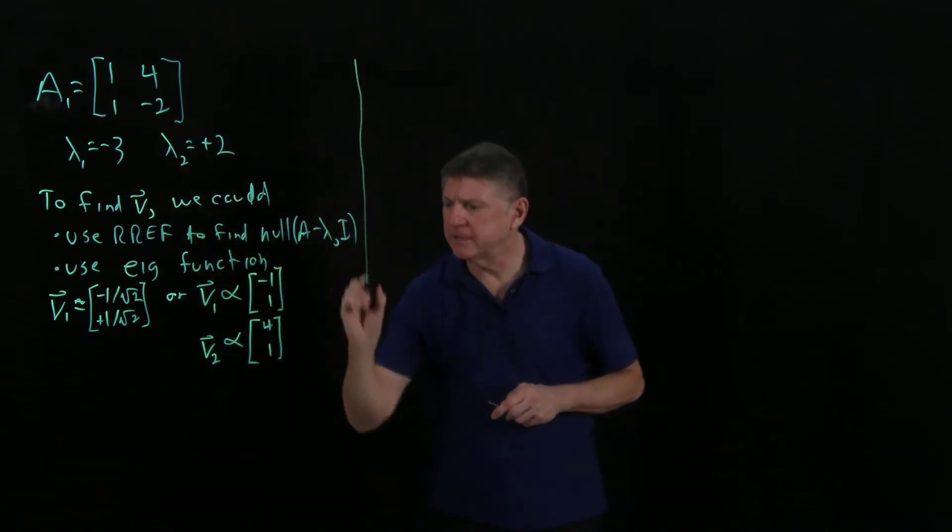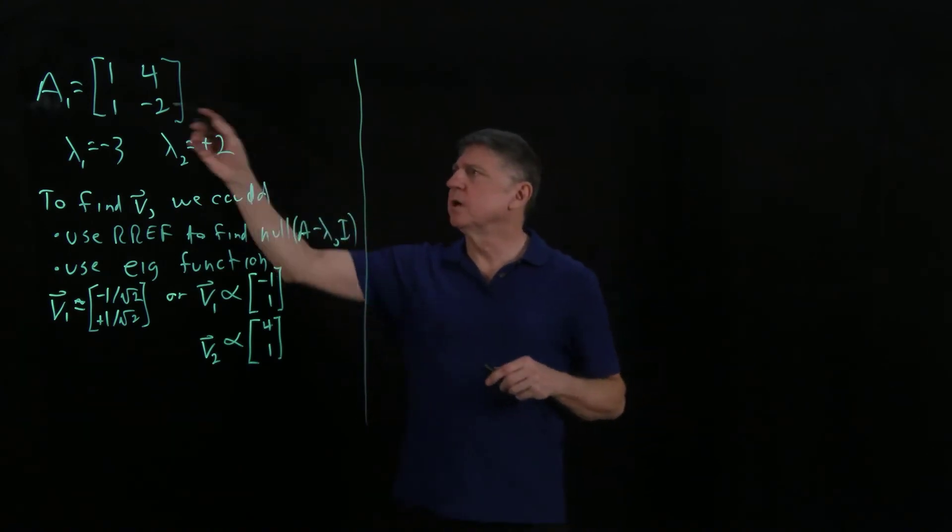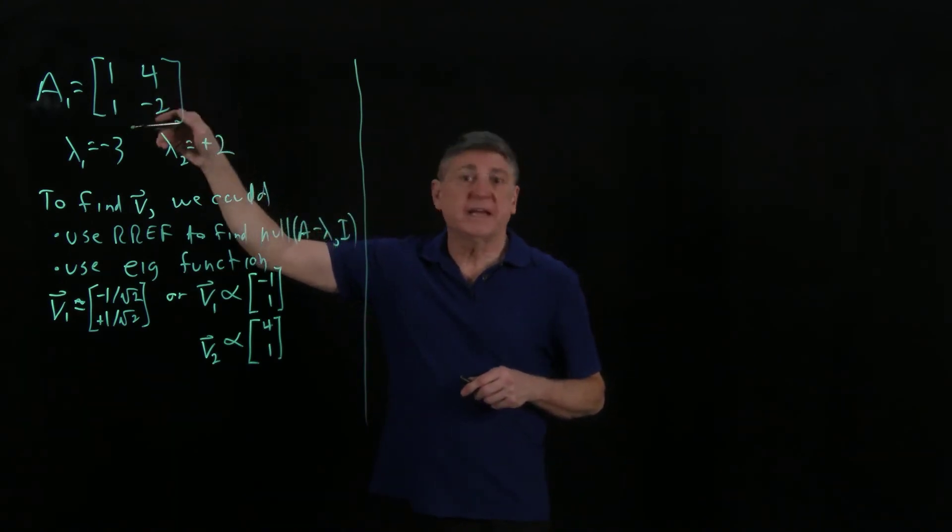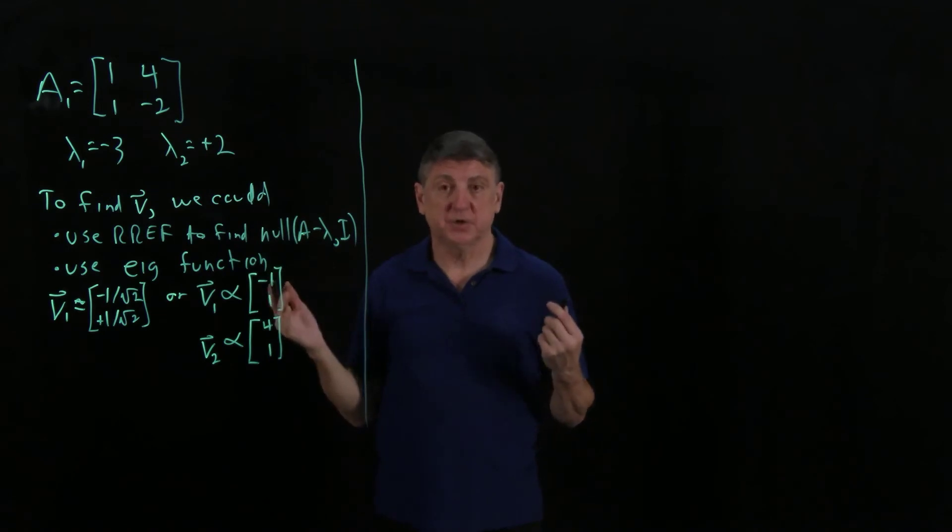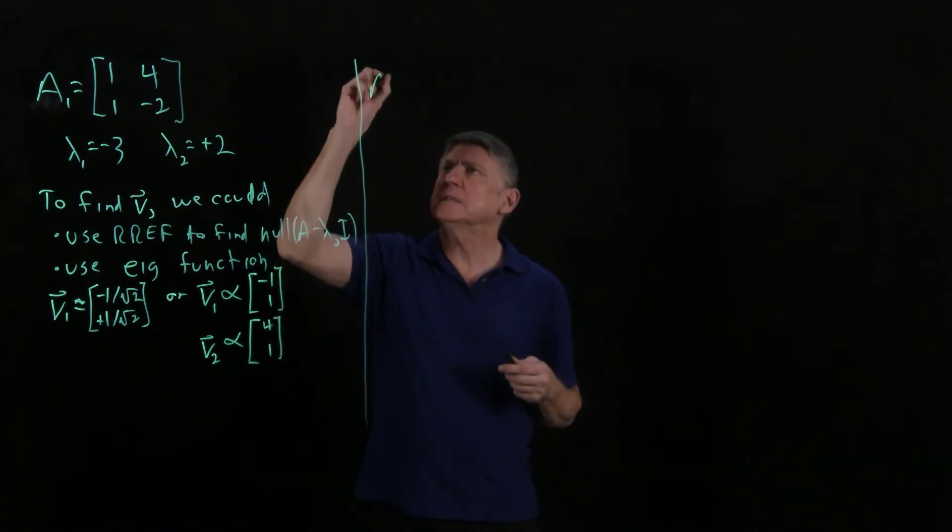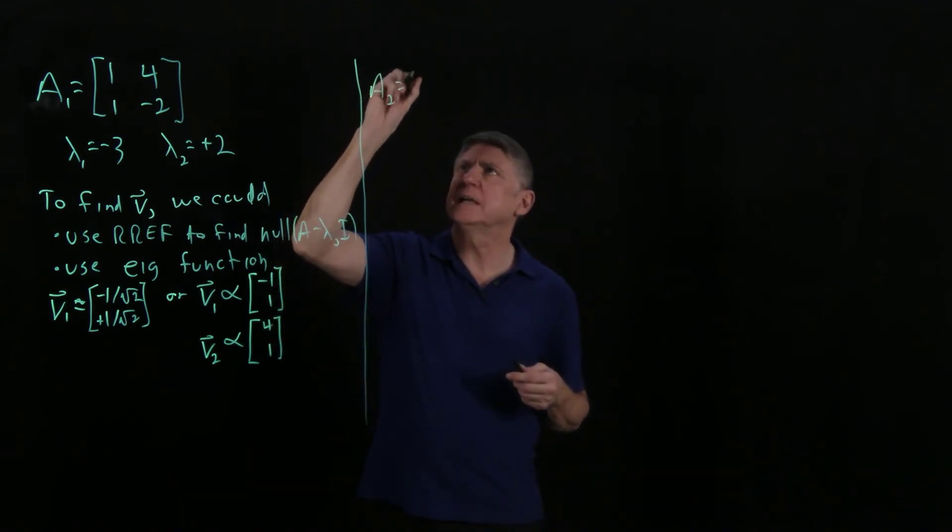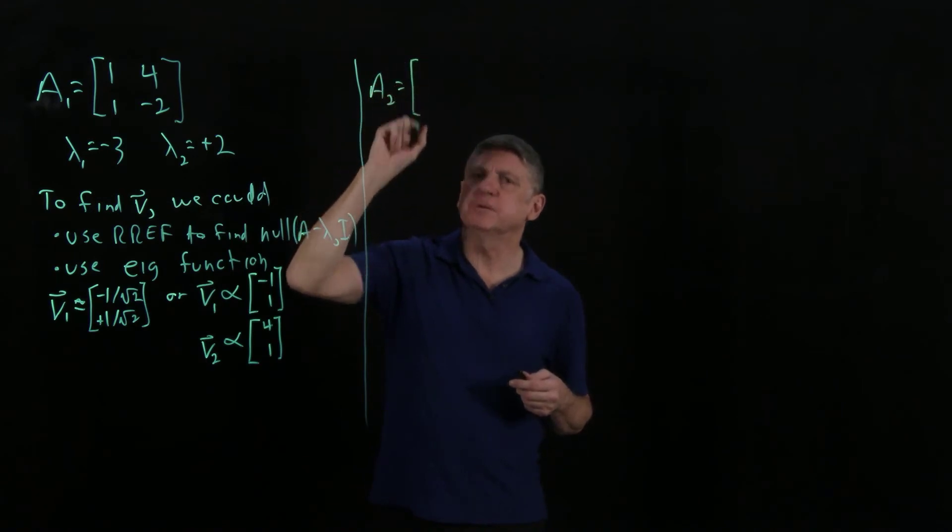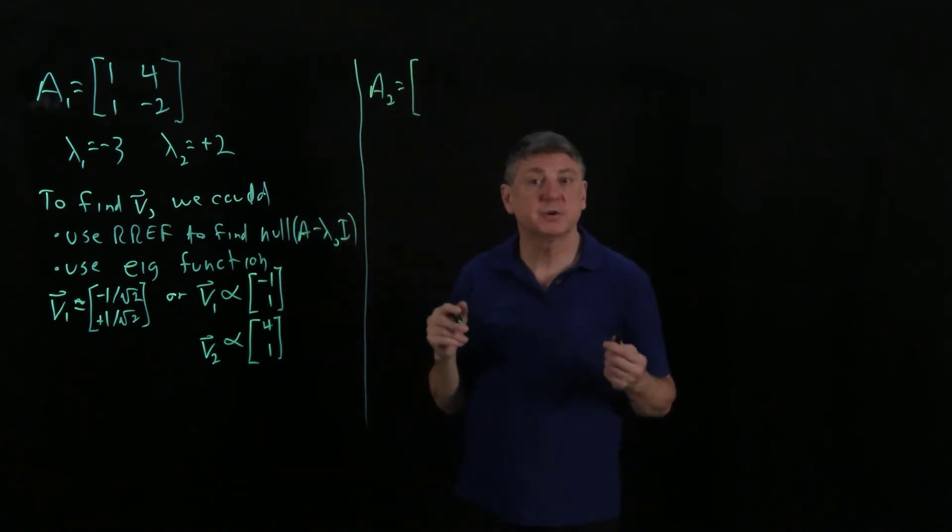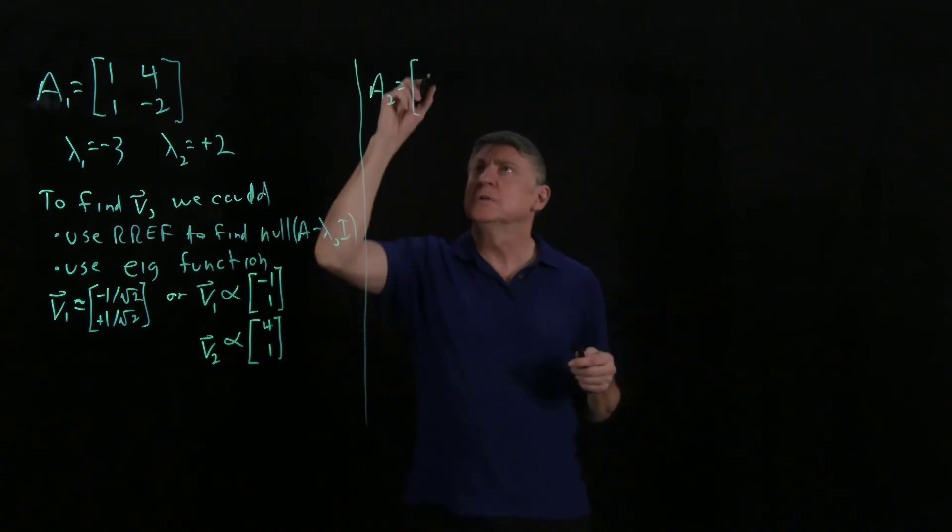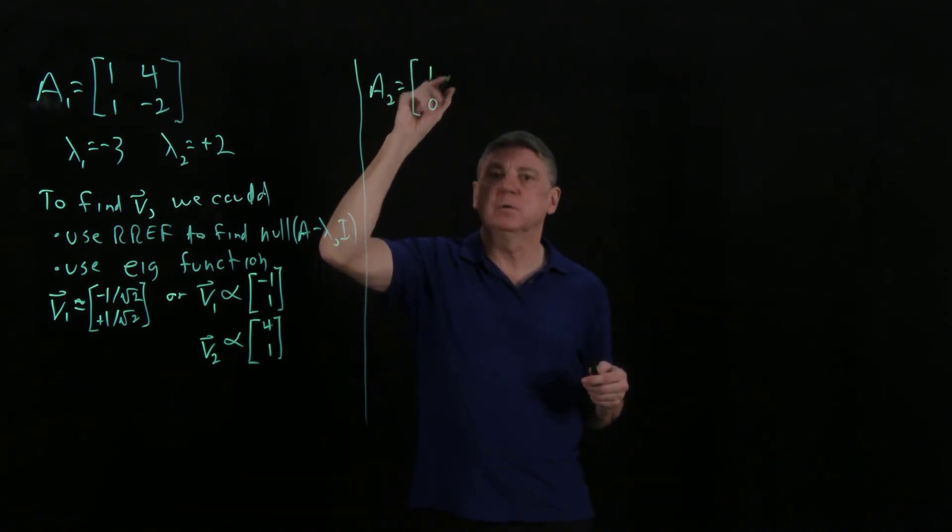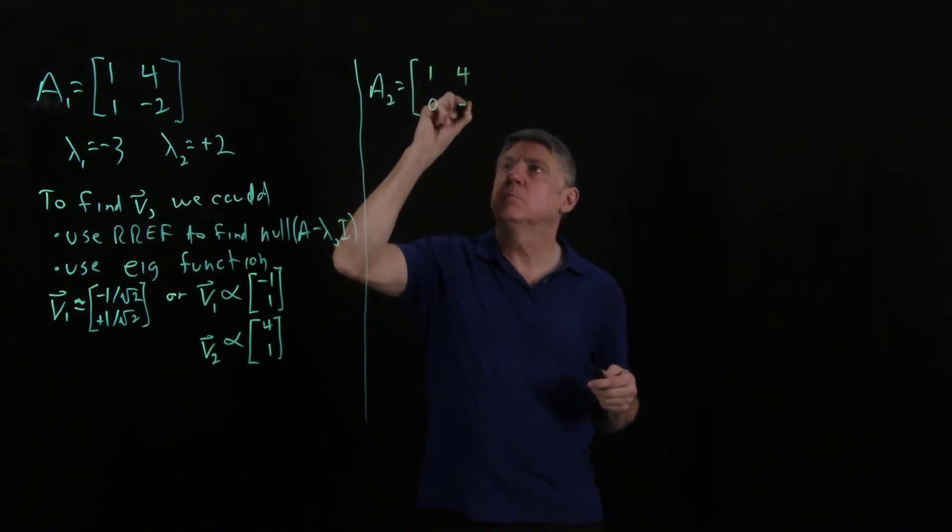Let's try another example. This one was an asymmetric matrix. It's not symmetric. Let's try a matrix that has a different structure. Suppose that it's a triangular matrix. So suppose that it's 1, 0, and 4, minus 2.